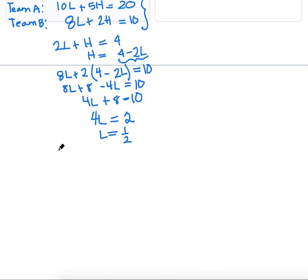Now we can solve for H. We knew that H was equal to 4 minus 2L, so that's going to be equal to 4 minus 2 times 1 half. Simplifying that, that's going to be 4 minus 1, or 3. So we've got that L is 1 half and H is 3.